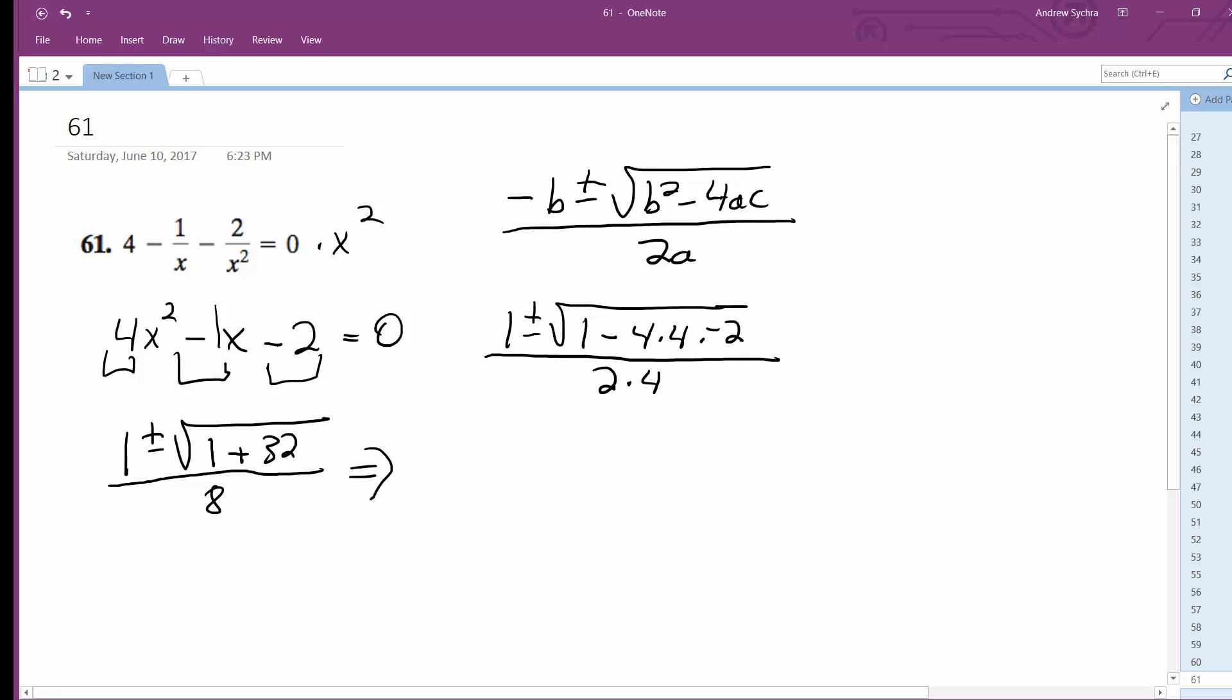Well this becomes 1 plus or minus square root of 33 over 8. And there's nothing you can do about 33, you can't pull anything out from under that radical. That's your solution: 1 plus or minus square root of 33 all over 8, and that's it.